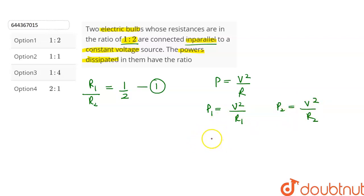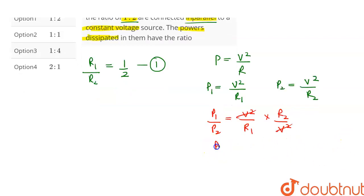Let's divide both these equations. This will give us P1 upon P2 is equal to R2 upon R1.